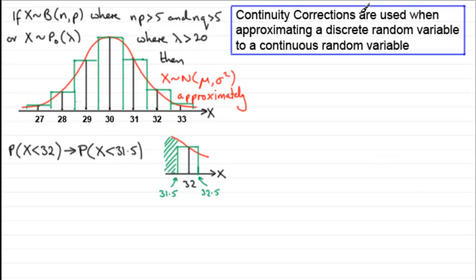So what we can say is that this probability is approximately the same then as working out the probability that X is less than 31.5. And this, as I say, is called a continuity correction. Continuity corrections are used then when approximating a discrete random variable to a continuous random variable. And what we would then go on to do is use this value with the normal distribution to work out an approximate value to this one.